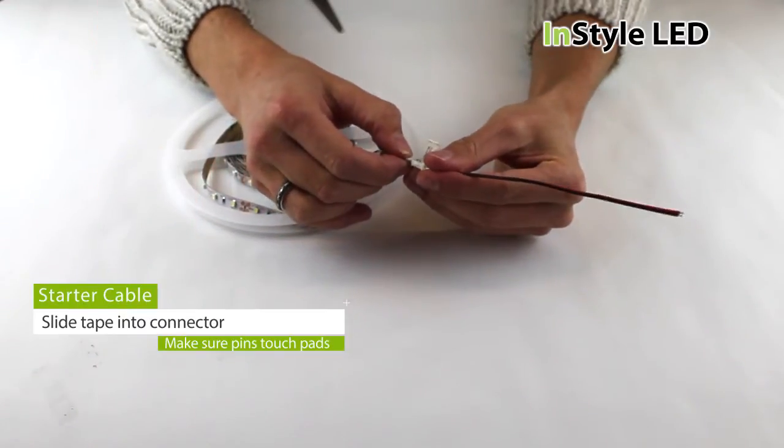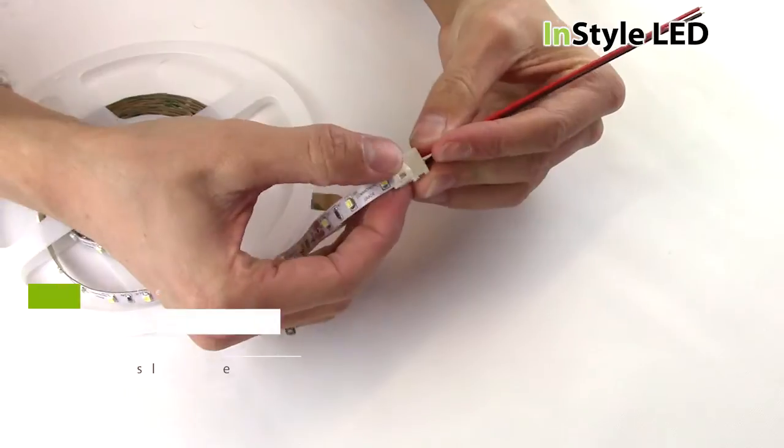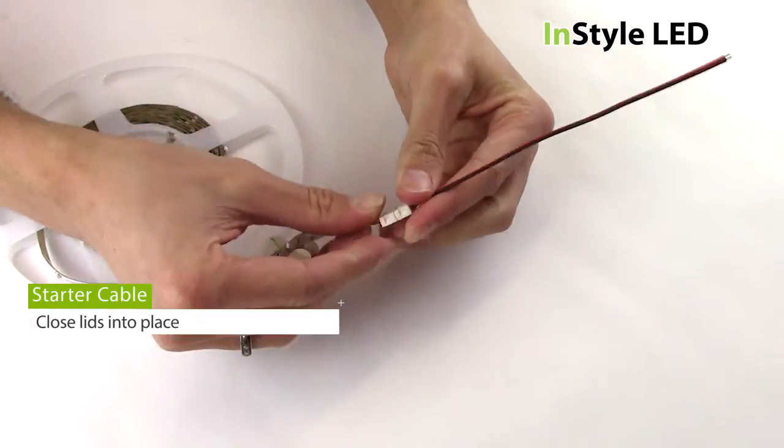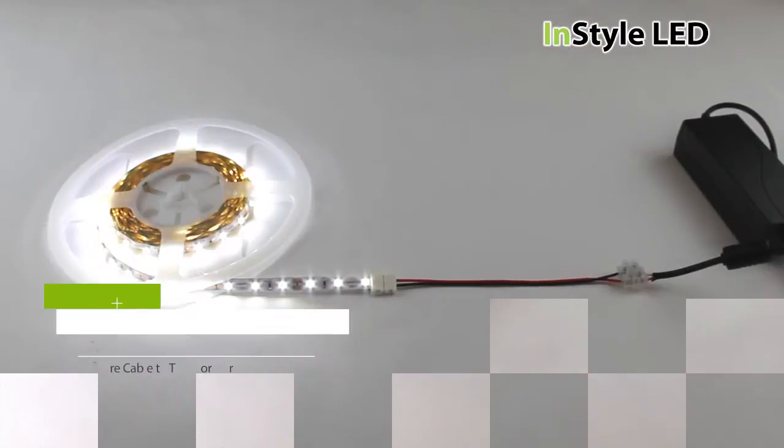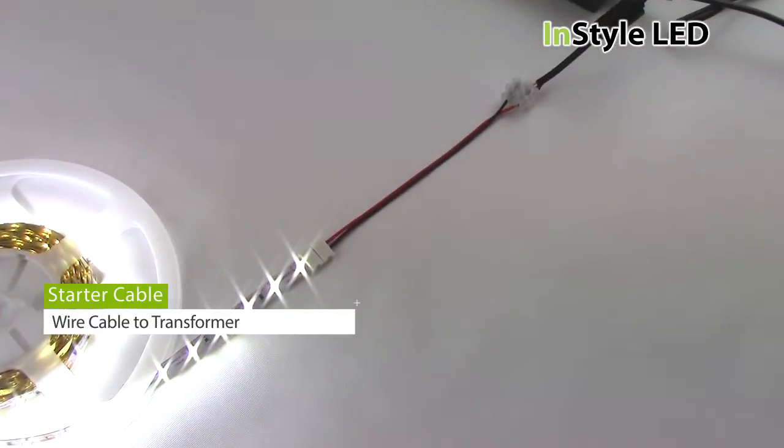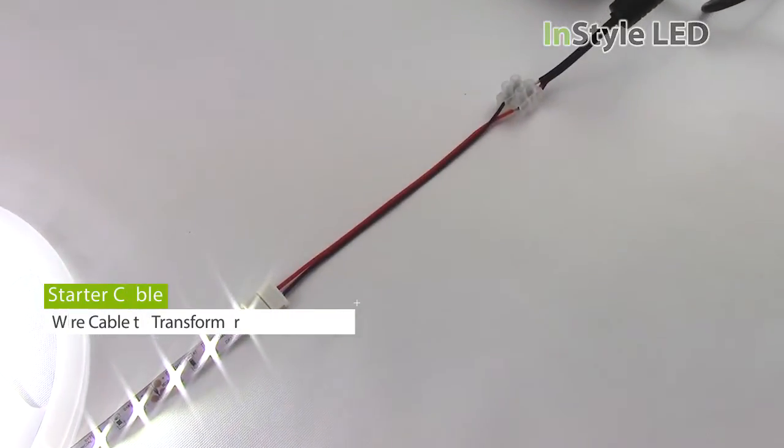The starter lead connector allows you to join the LED tape to a transformer. Again, to fit, open the connector, slide the LED tape in, and close the connector. Then connect to transformer.